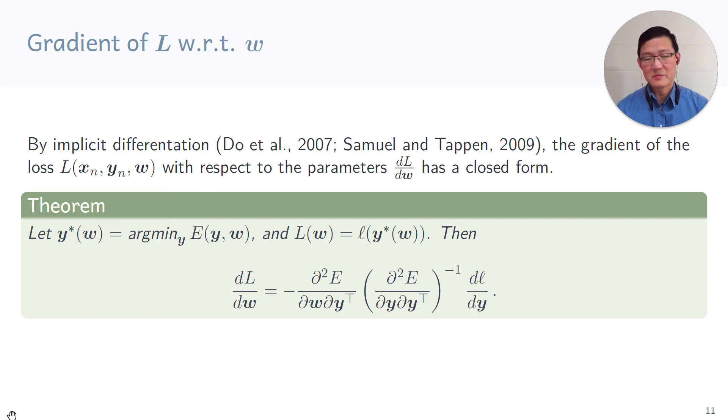Turns out that more than 10 years ago, people discovered that you can solve this gradient by doing implicit differentiation. The same approach can be used for hyperparameter optimization. So explicitly I can say the gradient of the loss with respect to the parameters w has a closed form, it turns out. And here's the theorem which we will try and develop over the next few slides and come back to this theorem before.